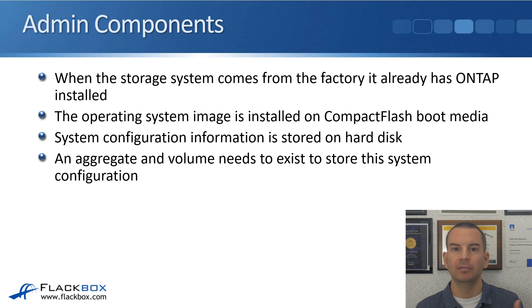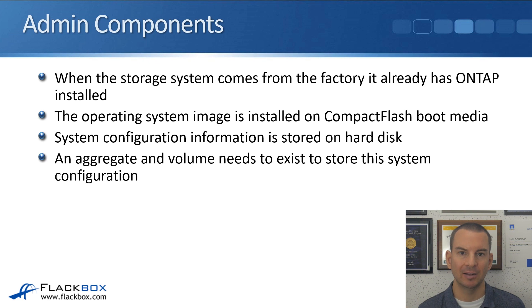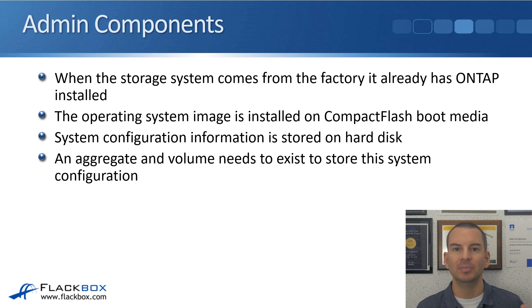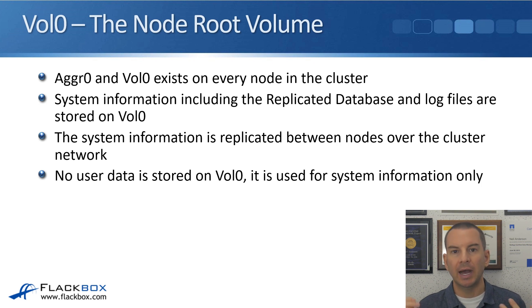When you configure the system, that information is stored on disk. As you learned in the last lecture about the ONTAP architecture, we've got our disks, our aggregates, and our volumes, and the volume is the lowest level that data can be accessed at. So because that system information is stored on disk, we need to have a volume and an aggregate to store it on. The volume for that system information is vol 0, and it is stored on aggregate 0.